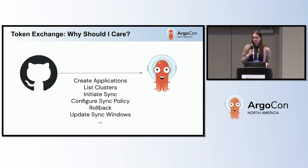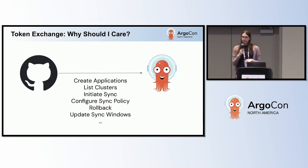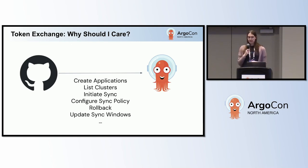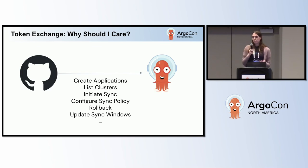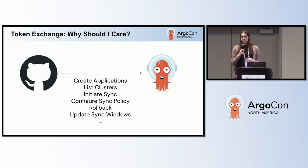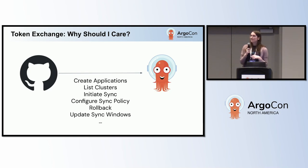For example, listing clusters or cluster endpoints, initiating syncs or configuring sync policies, or doing automated rollbacks — really anything you might want to use the Argo CD API for. What's powerful about this is it lets you do this automatically using OIDC.